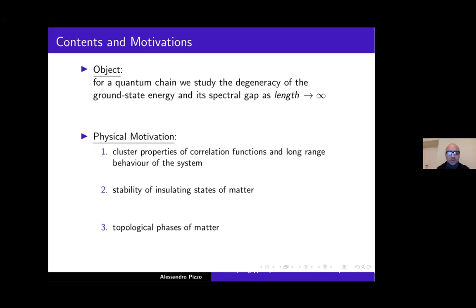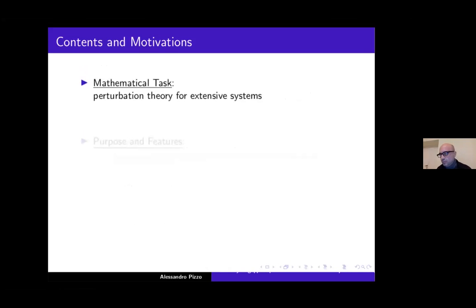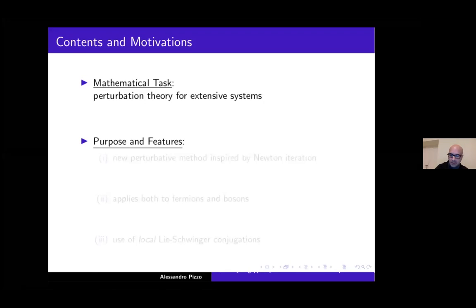We want to check whether a Hamiltonian of a quantum chain has a gap above the ground state energy. In this respect I would like to mention the work by Marius Lemm and co-workers, where they studied Hamiltonians related to the famous AKLT model. From the mathematical point of view, our task is to implement a perturbation theory for extensive systems. Indeed, what we have done is introduce a new perturbative method inspired by Newton iteration.